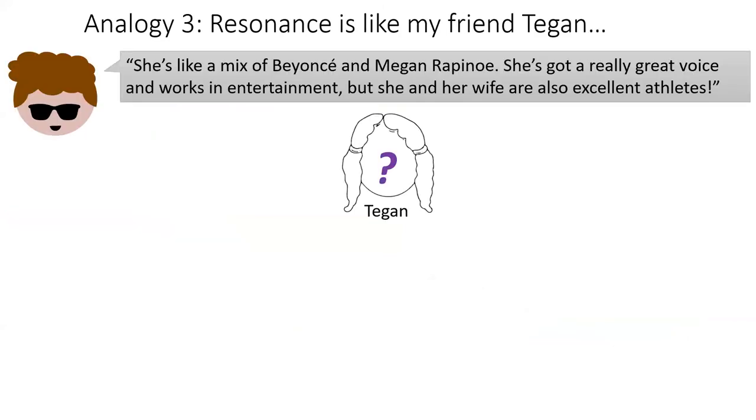In analogy three, imagine I'm trying to describe to you about my cool friend, Tegan, whom you've never met. To describe Tegan, I say, Oh, Tegan, she's like a mix of the singer Beyonce Knowles and the athlete Megan Rapinoe. She's got this really great voice and works in entertainment, but she and her wife are also excellent athletes.